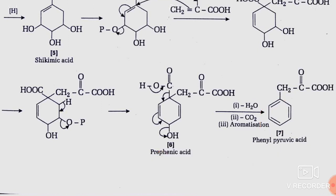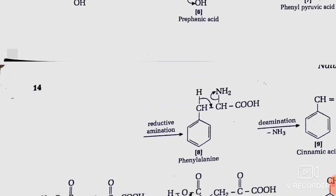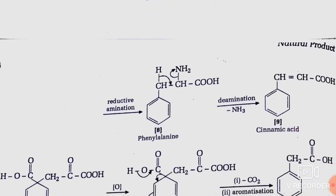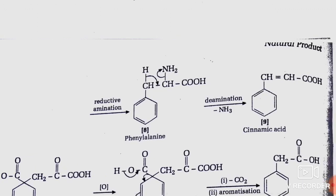This phenylpyruvic acid once again undergoes reductive amination, converting into phenylalanine. Phenylalanine then undergoes rearrangement — hydrogen bond delocalizes, and NH2 is eliminated in the form of NH3 through deamination — and here there is formation of cinnamic acid, which is structure nine.